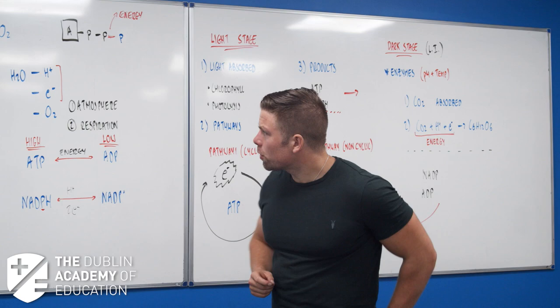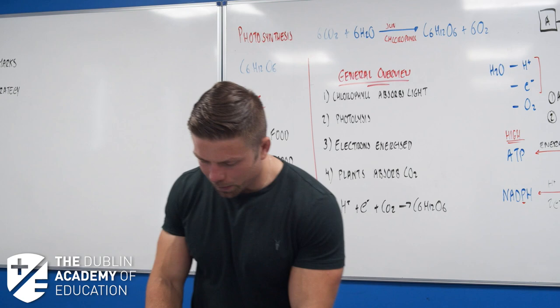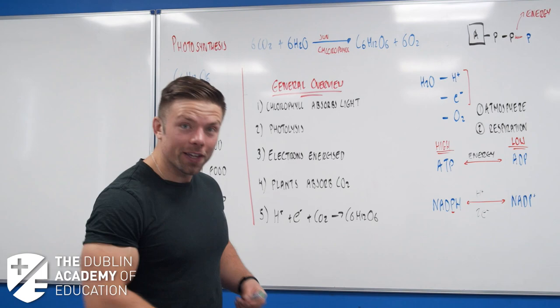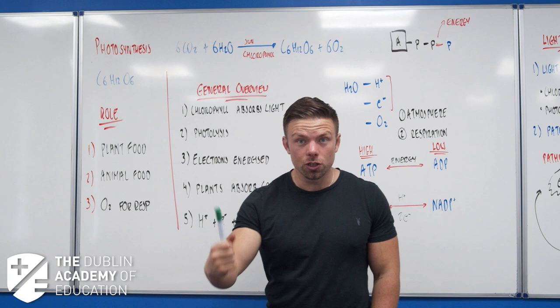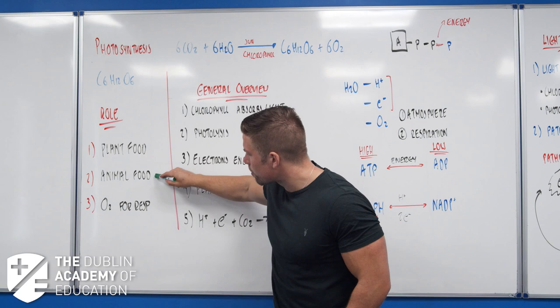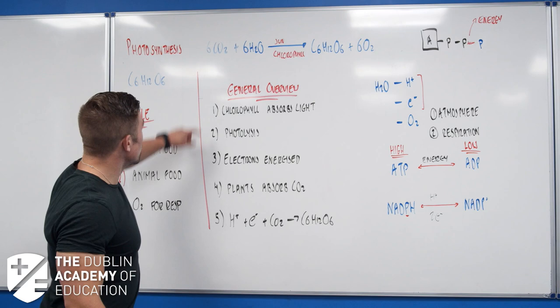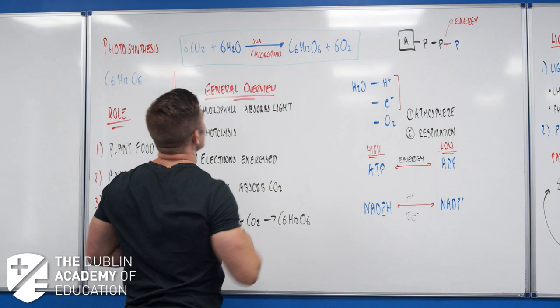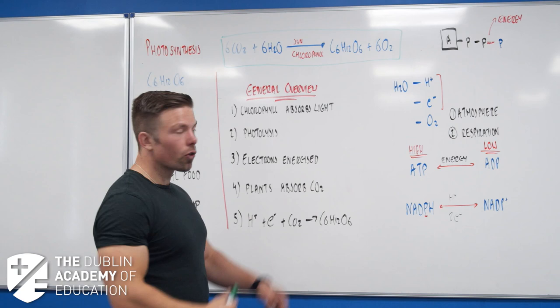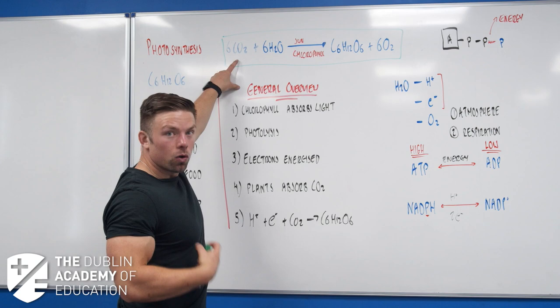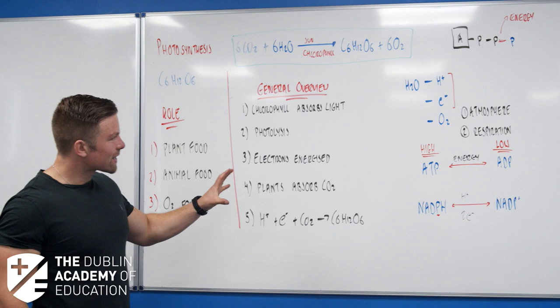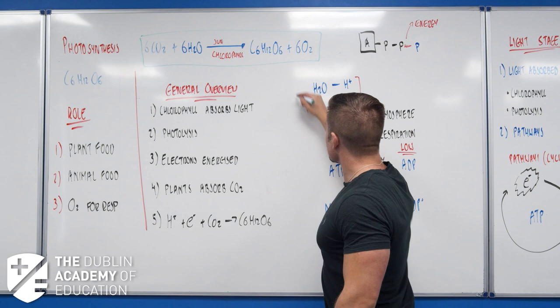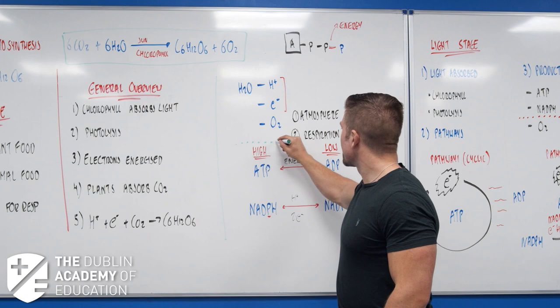Let's recap. Photosynthesis is a really big chapter - worth potentially up to 15% of your entire grade including the experiment. The headings for exam questions: what it is - the production of food using light and inorganic materials. The role of it - plant food, animal food, oxygen for respiration. Then the equation. Anyone who's done respiration will recognise it's just the other way around.